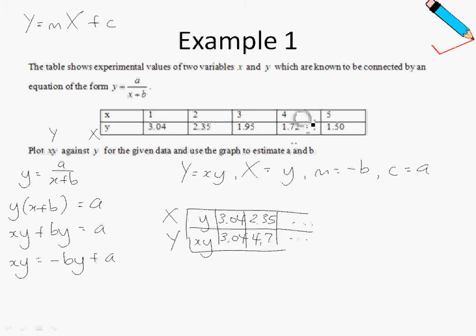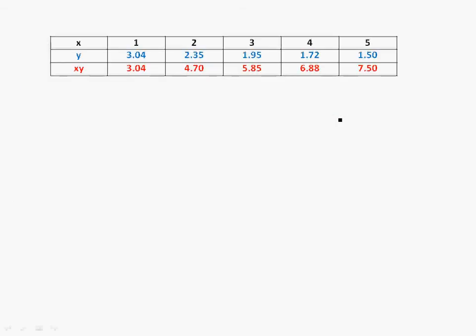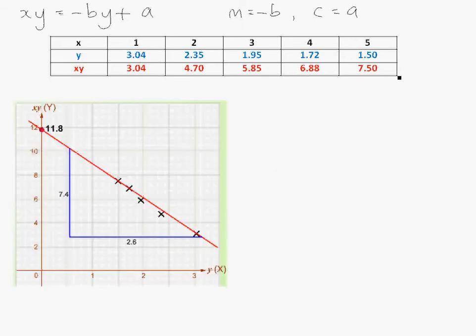Do the rest of the calculation on your own, and you should arrive at this table that you see over here. Recall that our graph was actually xy equals negative by plus a. Take note that my gradient is negative b and my y intercept is a. Plotting this set of values, the numbers in blue and red onto graph paper, we will get this graph that you see over here.